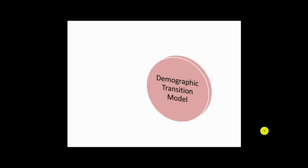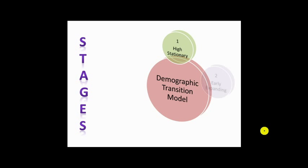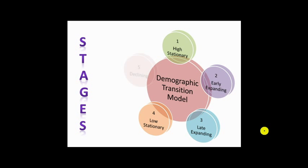The demographic transition model is set out in five stages and was based on the United Kingdom's population charting, since it was the first country to pass through the demographic transition. The stages are: Stage One, the High Stationary; Stage Two, the Early Expanding; Stage Three, the Late Expanding; Stage Four, the Low Stationary; and Stage Five, the Declining stage.